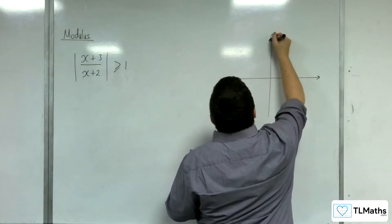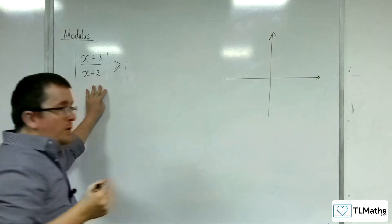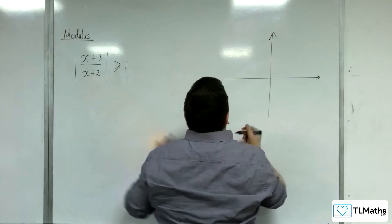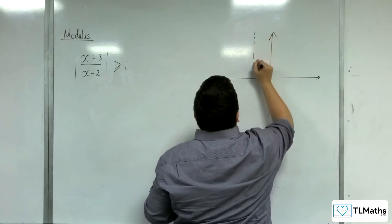So let's sketch ignoring the modulus signs first. There's going to be a problem when x equals minus 2, so there's a vertical asymptote there.